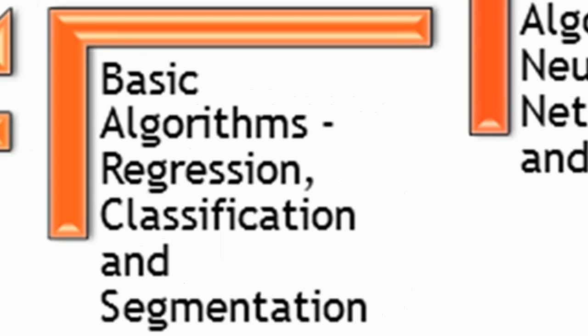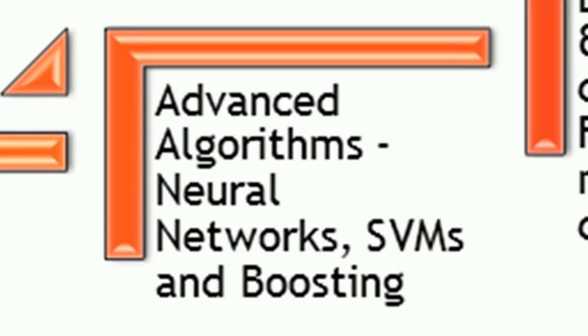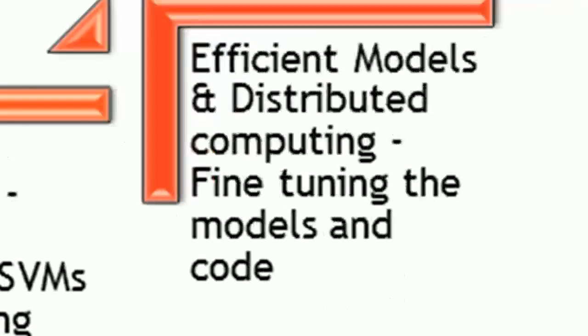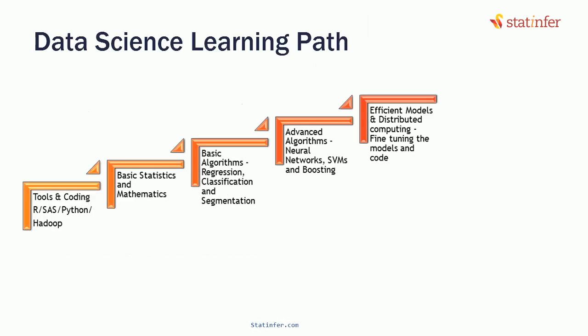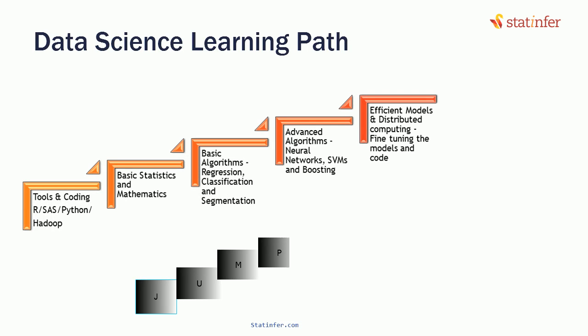In step four, you would move ahead to advanced algorithms like neural networks, SVMs, boosting, etc. Finally, in step five, you are ready to build efficient models, do distributed computing, and fine-tune the models. And then you could jump into coding.